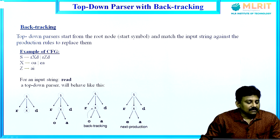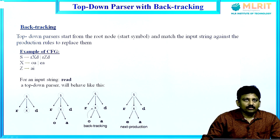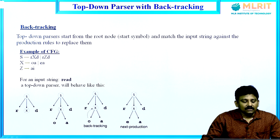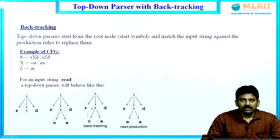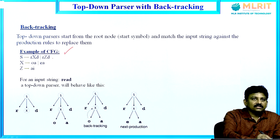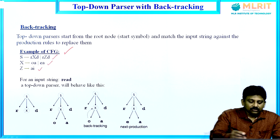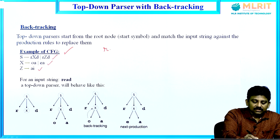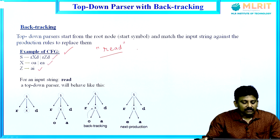Today the first topic is top-down parser with backtracking. Top-down parser starts from the root node, that is the start symbol, and matches the input string against the production rules to replace them. In this particular example: S derives rxd or rzd, X derives oa or ea, Z derives aa. The given input string is 'rea', and we are trying to construct a parse tree for this string.